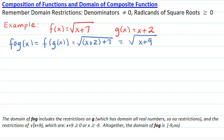The domain of f circle g includes the restrictions on g. g is x plus 2, so the domain of that is all real numbers — no restrictions. Then we consider the restrictions on the final answer of the composite function, which was the square root of x plus 9. This has a square root radicand, and the radicand x plus 9 must be greater than or equal to 0, so x must be greater than or equal to negative 9.